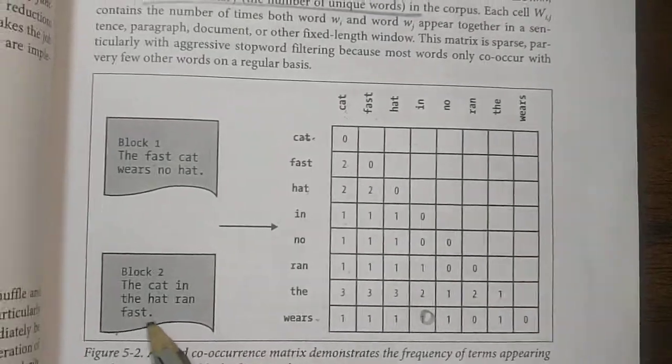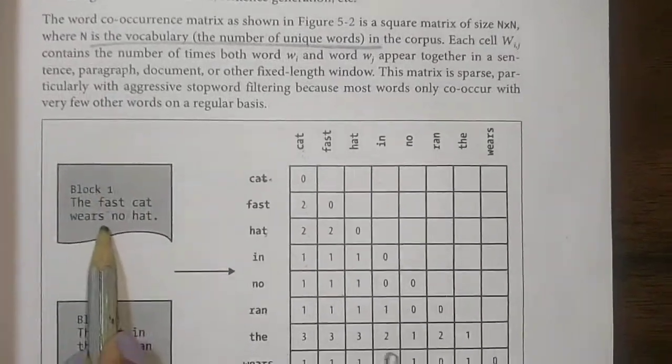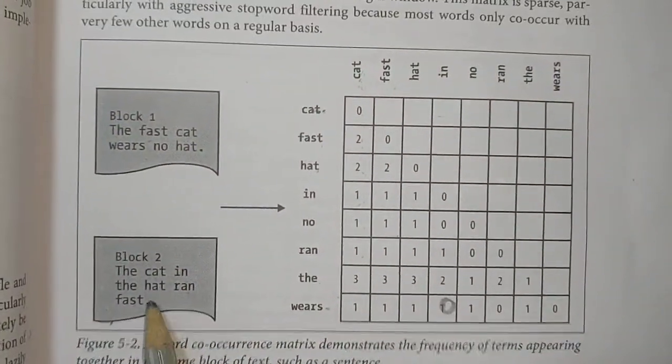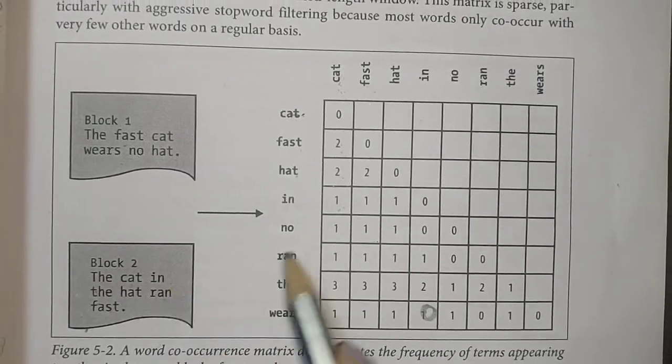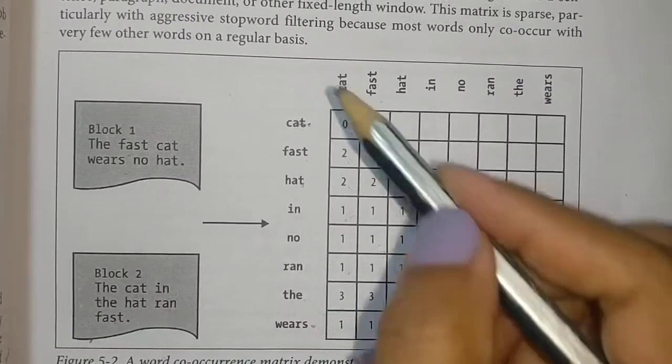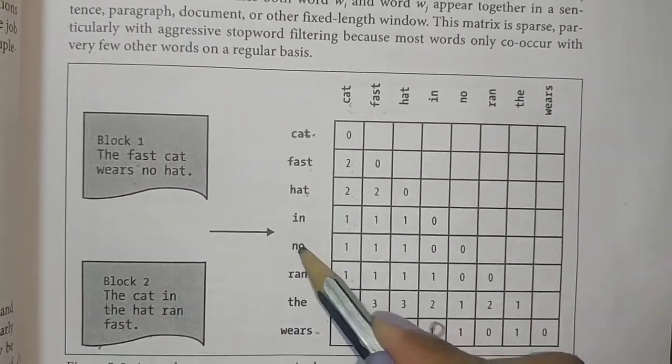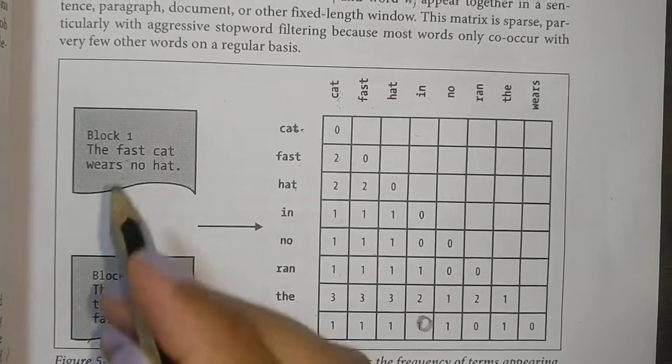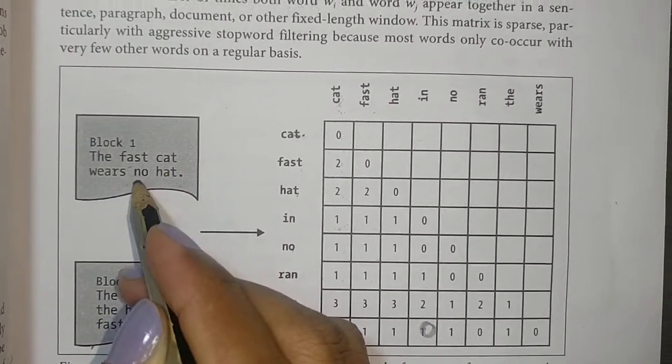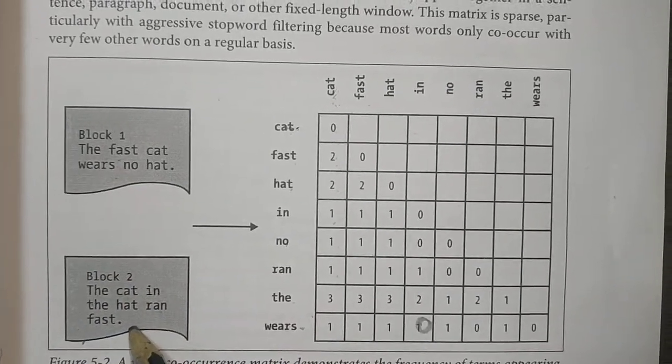Now cat and in: the first sentence does not have 'in', whereas in the second one you have cat and in, so it's written as one. Next, cat and no: cat and no occurs only in the first sentence, so it's one.